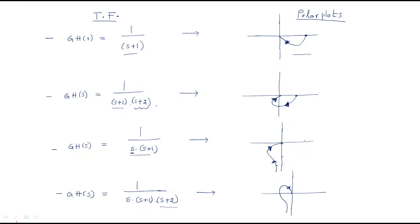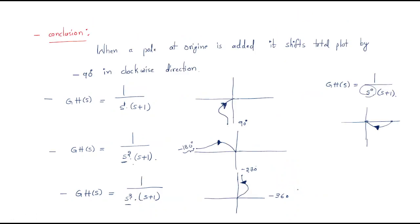The starting phase is minus 180 degrees and the ending phase is minus 270 degrees. If another pole is added, the starting and ending angles shift accordingly. So whenever we add a pole at the origin, it shifts the total plot by minus 90 degrees.